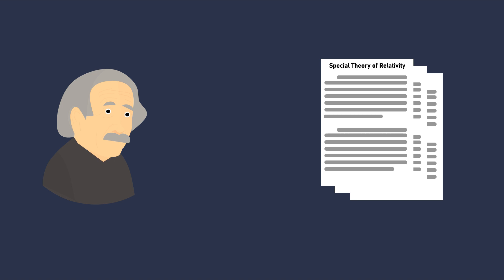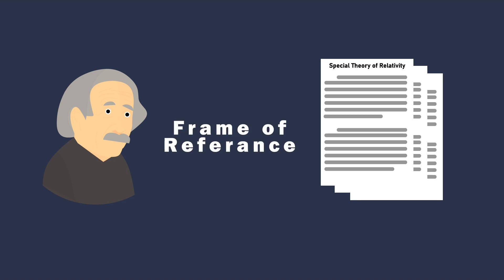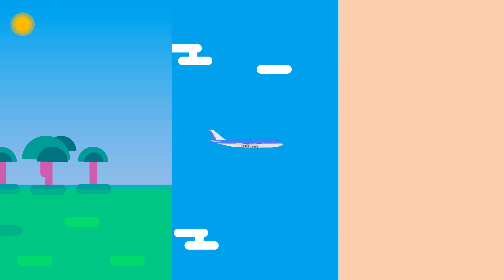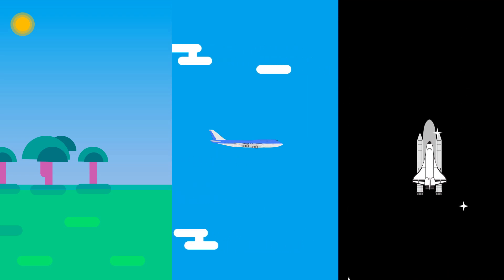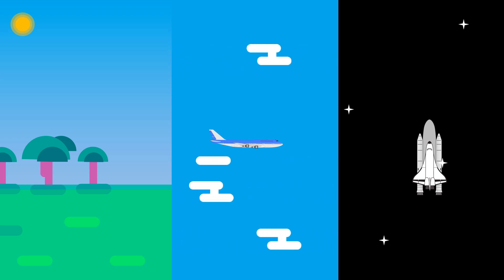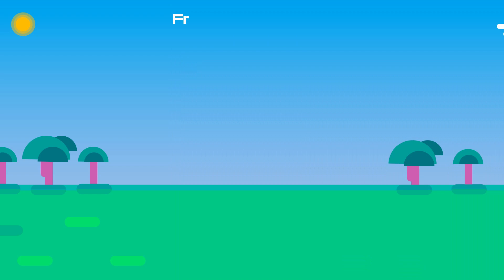The frame of reference is a key point in Einstein's Special Theory of Relativity. The frame of reference is any point in space from where an observer observes an event. For example, if we are standing on the ground, then the ground itself will be the frame of reference. If we board an aeroplane, then it will be called a frame, and if we are in a spacecraft, the spacecraft will be a frame of reference.